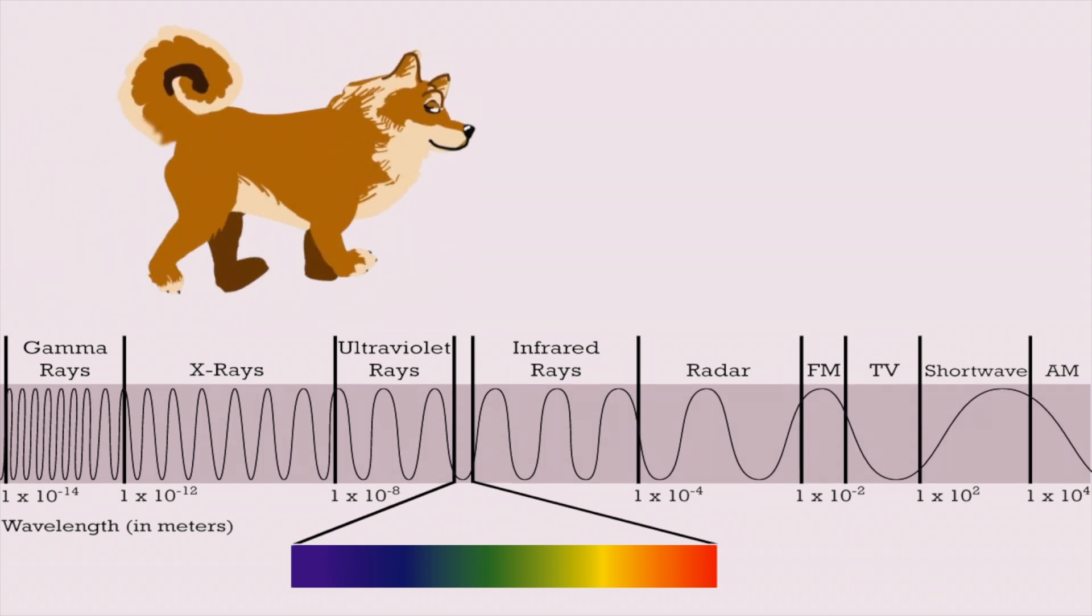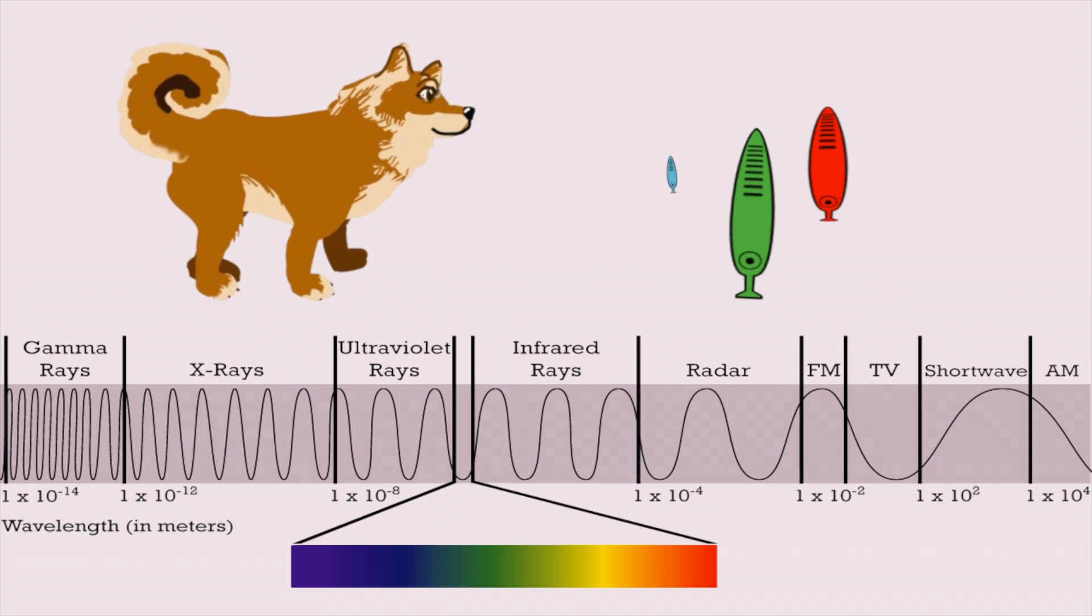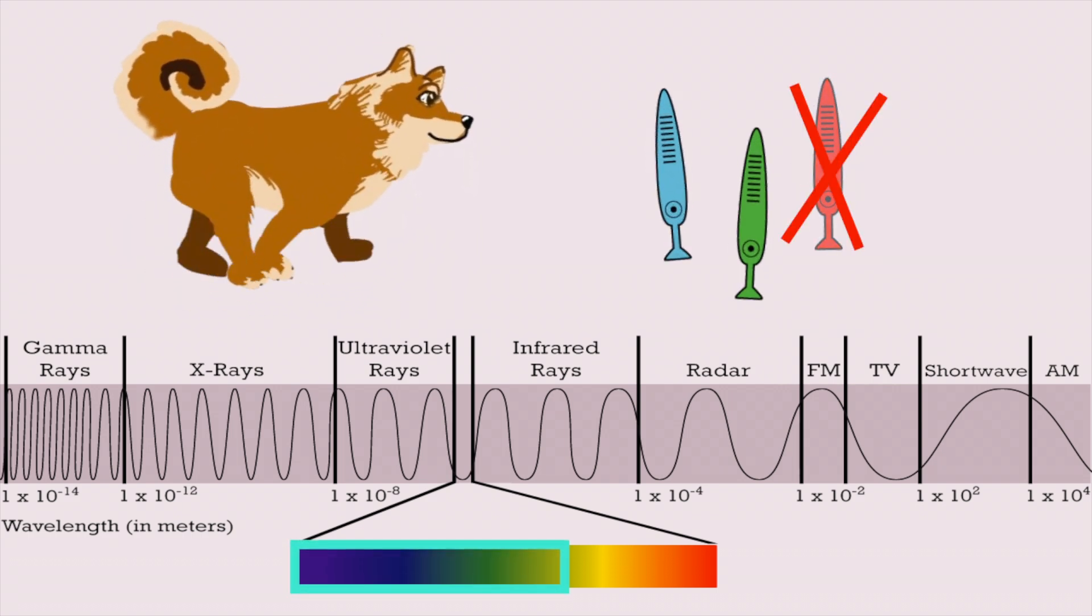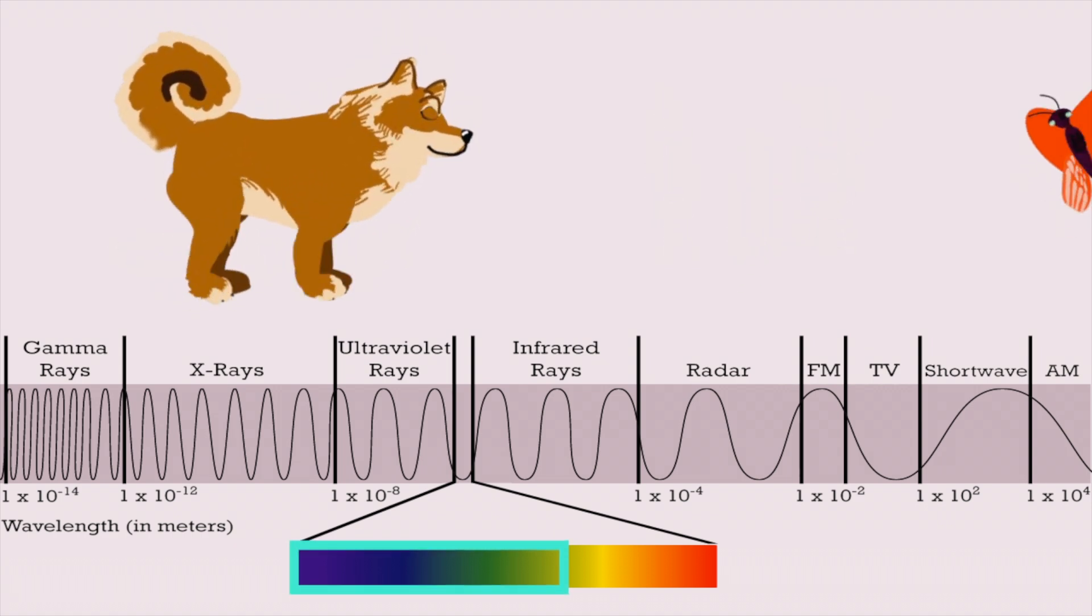Dogs, for example, are more limited in the wavelengths they can see because they only have two types of cones, leaving them colorblind to differences between red and green.